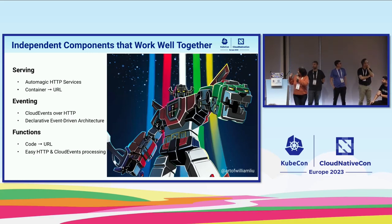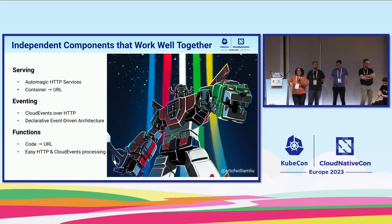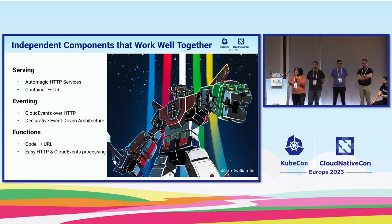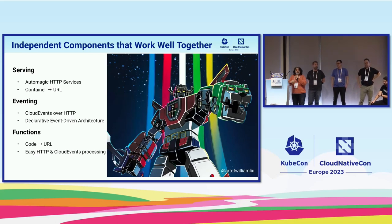To sum up: the independent components are Serving, Eventing, and Client, and we have a CLI that ties it all together. Serving provides what I call automagic HTTP services — you give us a container in one step, we give you the URL. Knative Eventing is a whole gamut of tools and infrastructure for creating event-driven apps. And Knative Functions lets you bring your own code; we provide the project scaffolding, templates, and even handle building the container, giving you the URL directly.